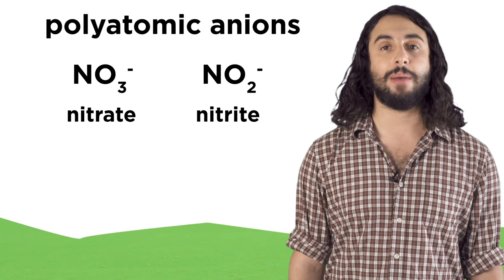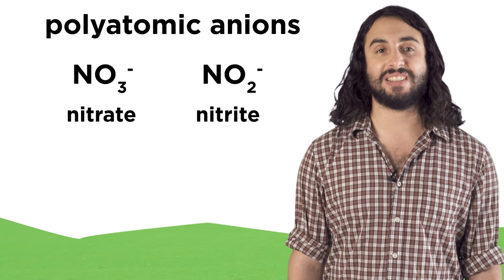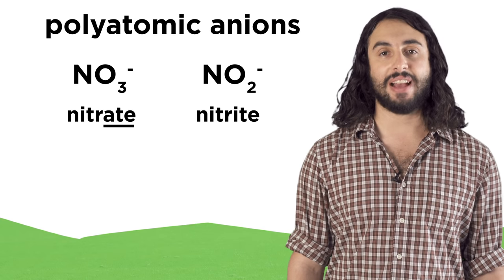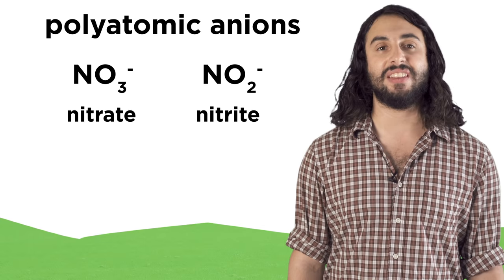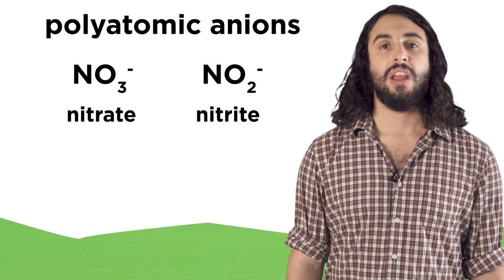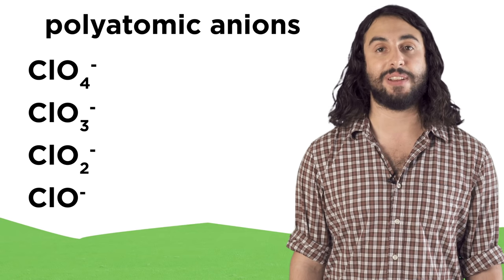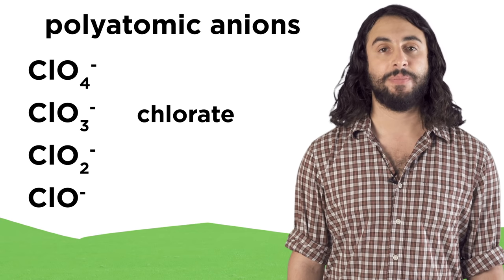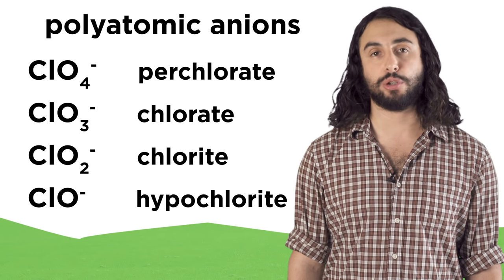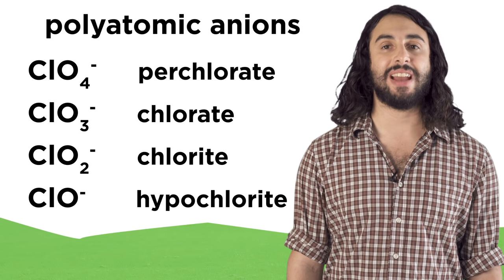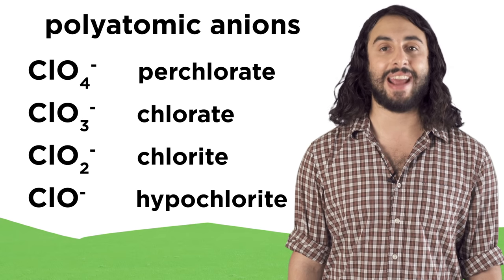For similar polyatomic anions with different numbers of oxygen atoms in them, the one with more bears the suffix "-ate", and the one with less bears the suffix "-ite". So this is the nitrate ion and this is the nitrite ion. If there are more still, we can use the prefixes "per-" and "hypo-" in addition to the suffixes. So this is chlorate, this is chlorite, this is hypochlorite, and this is perchlorate. These prefixes and suffixes are used as necessary depending on how many variations a particular ion has.